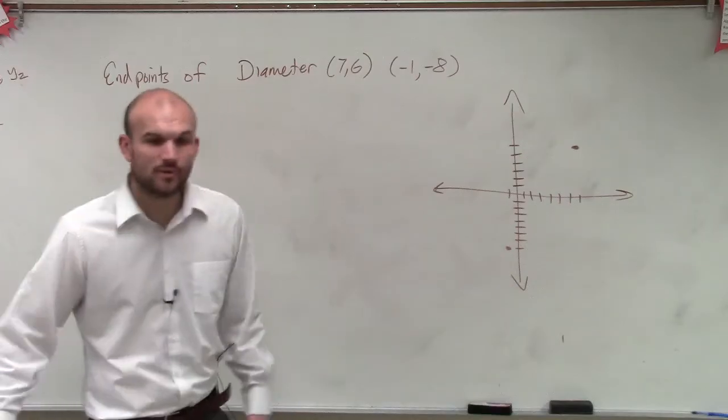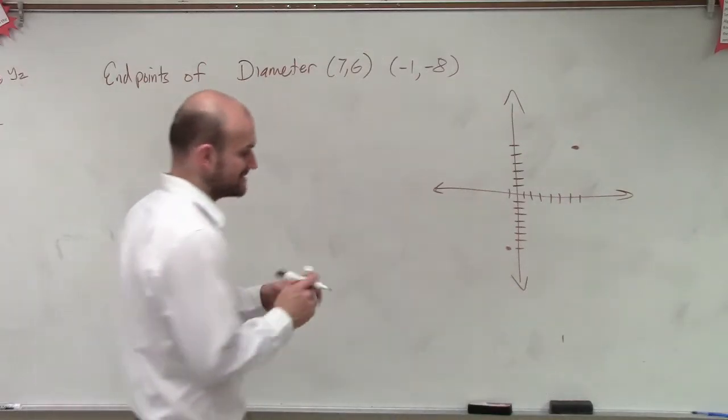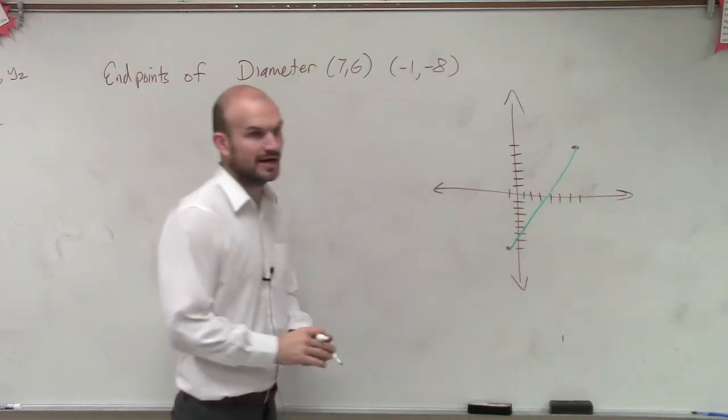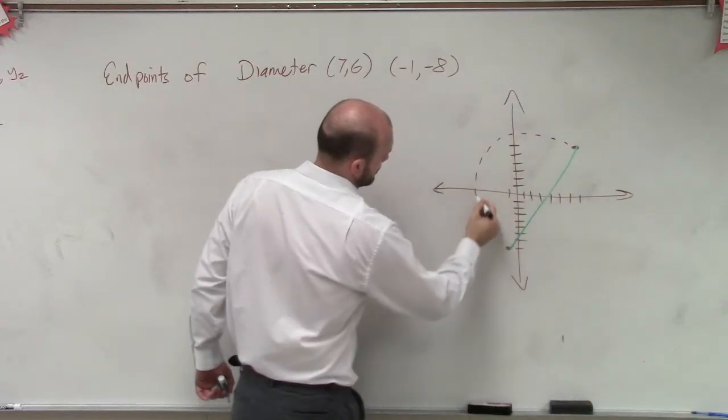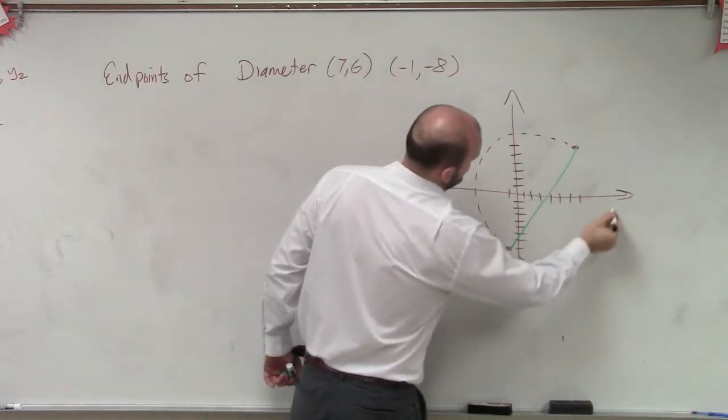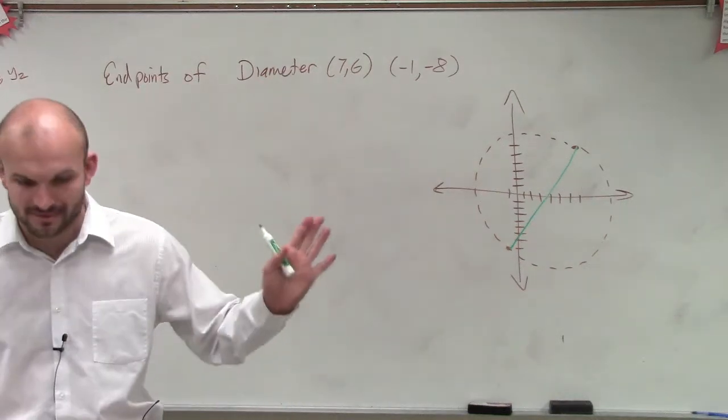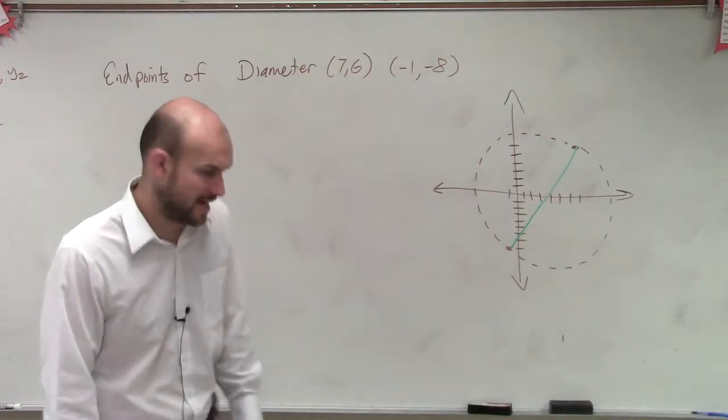So those are the endpoints of the diameter. So we can connect those and say that is the distance across my circle, right? And I'm going to try to do my best and say the circle is going to look something like that. Not going to be exact, but it's going to look something like that.